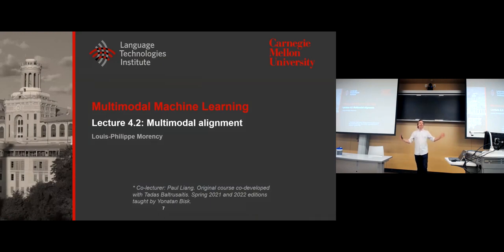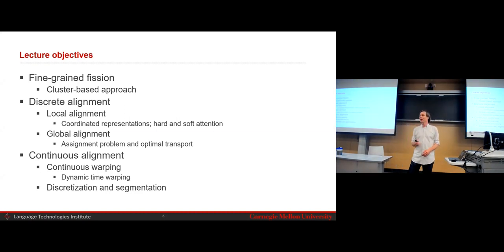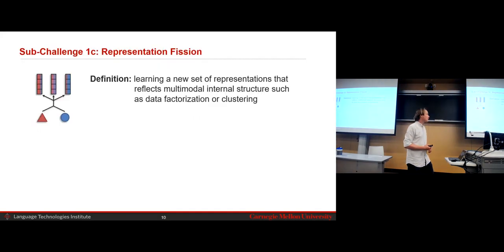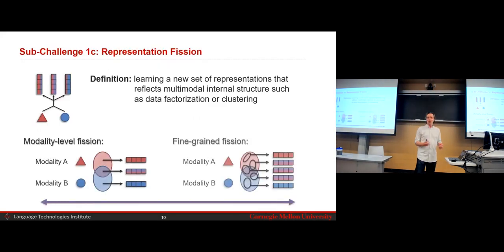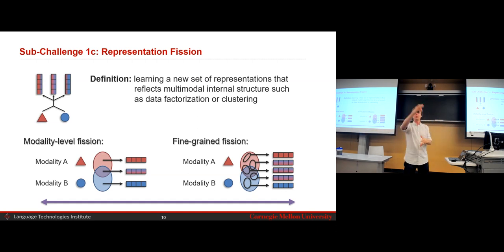Let's talk about multimodal alignment. But first, I need to wrap up fine-grained fission, so I'll give a quick overview on that. Then we'll talk about two of the three sub-challenges in alignment. In fission, we talk a lot about modality factorization — what is unique to one modality, what is unique to another, or what is joint, like the mutual information.